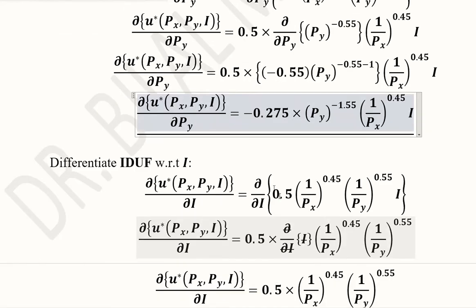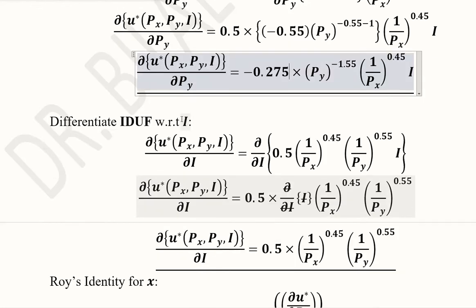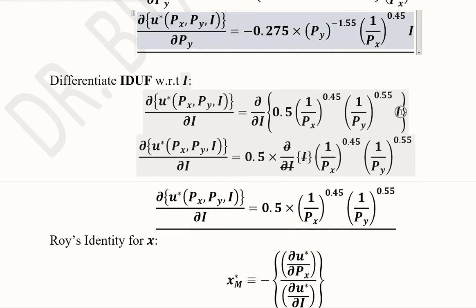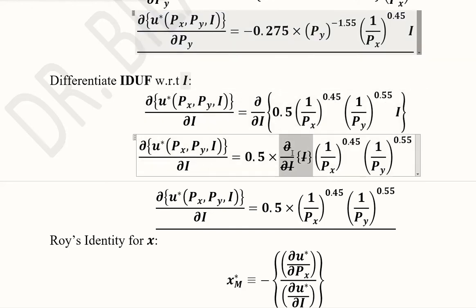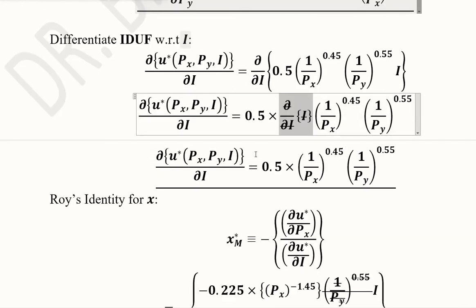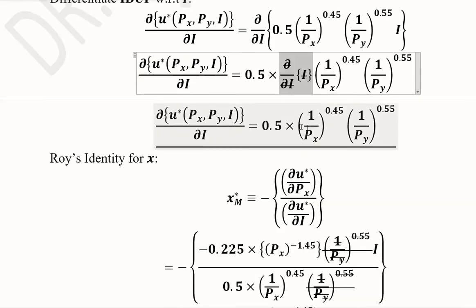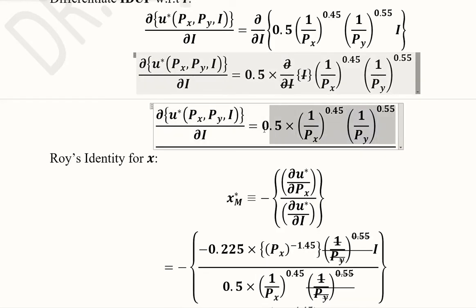Finally, we calculate the derivative with respect to I. The I term has a power of 1, so its derivative becomes 1. The terms that do not contain I remain as constants, and 0.5 comes out as a coefficient. As a result, I disappears due to differentiation, and we are left with the surviving terms. We now have all three required partial derivatives.